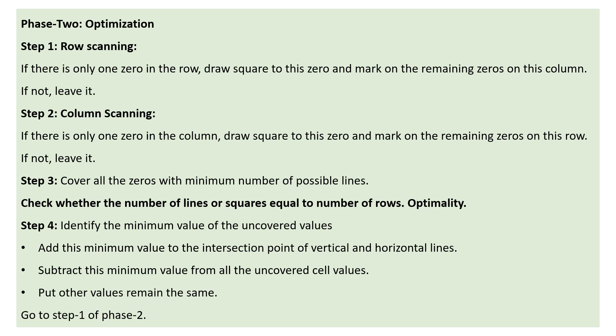Step two is column scanning. Once we finish the row scanning, if there is only one zero in a column, draw a square around that zero and mark the remaining zeros in that row. If not, leave it out. Step three is to cover all the zeros with the minimum number of possible lines. Then count the lines — if the number of lines equals the number of rows, optimality is already achieved.